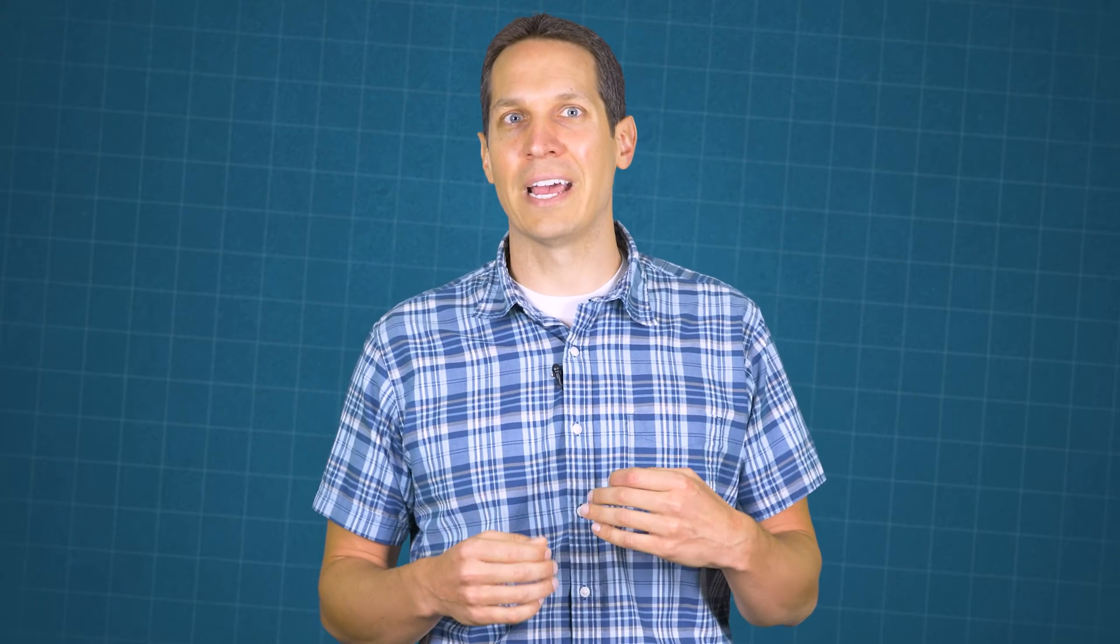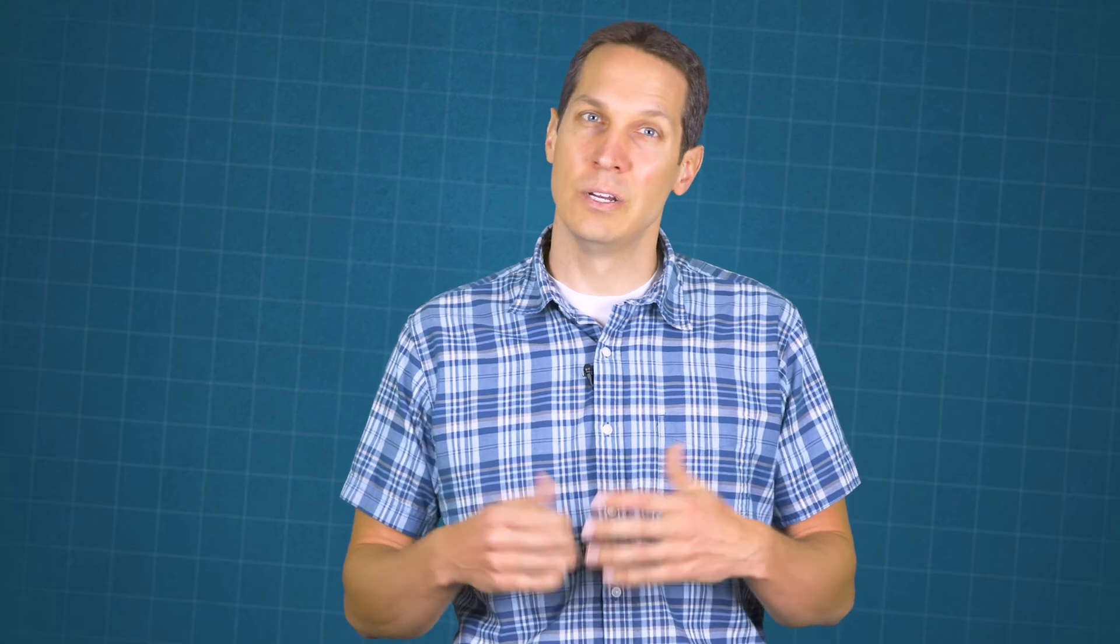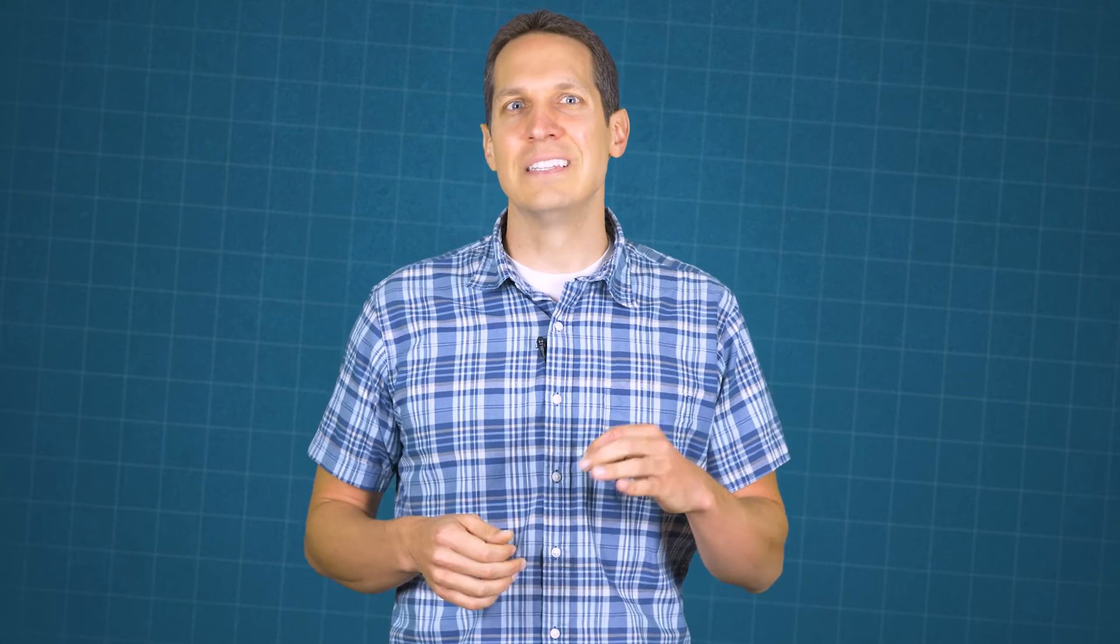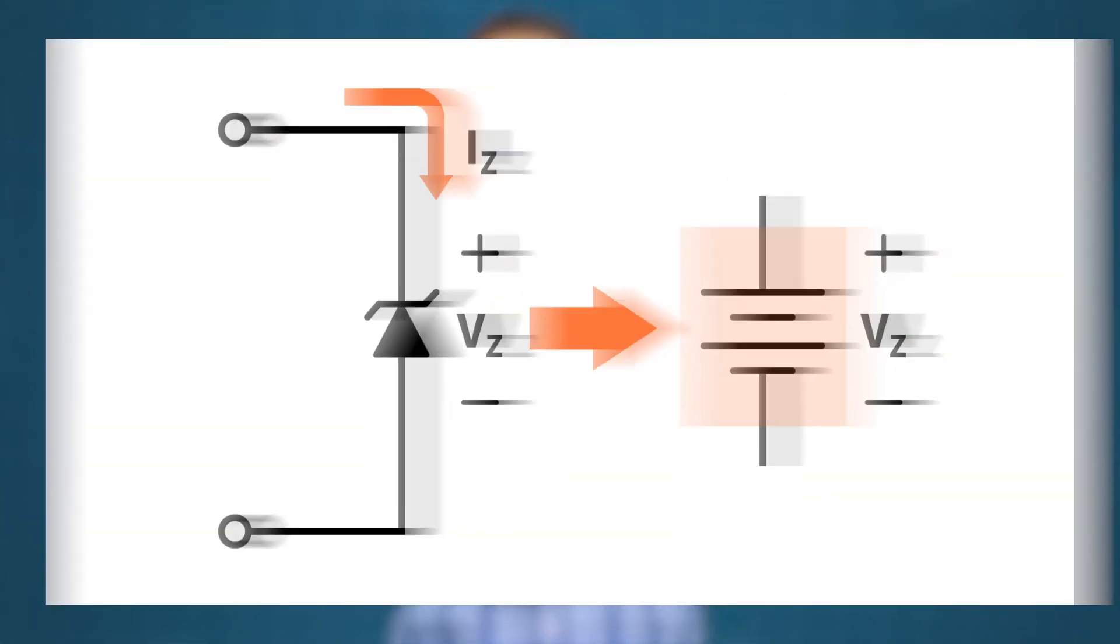A Zener diode operating in breakdown acts as a voltage regulator because it maintains a nearly constant voltage, which is equal to the Zener voltage across its terminals over a specified range of reverse current values. This constant voltage drop across the Zener diode produced by reverse breakdown is represented by a DC voltage symbol in schematics.